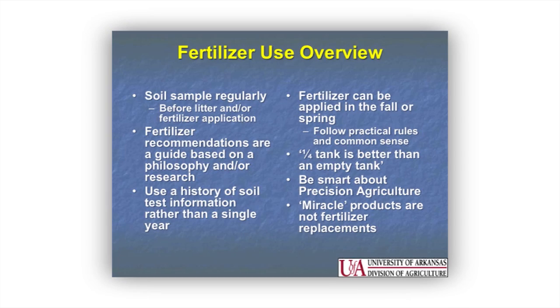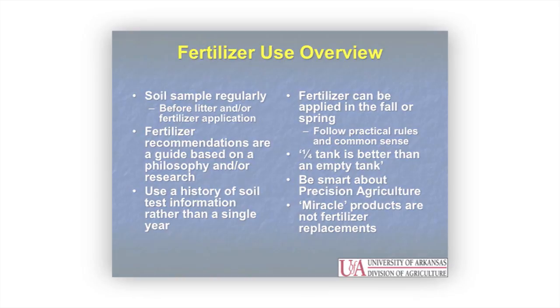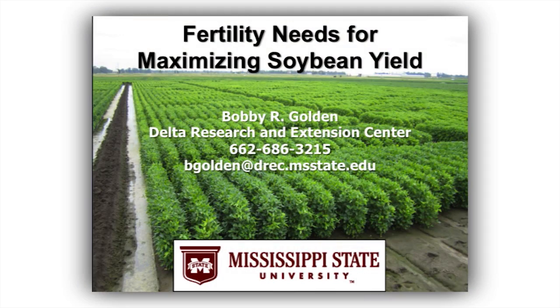To maintain high-yielding soybeans you need to soil sample regularly, and do this before putting out any litter or fertilization. It's also important to soil test behind the same crop in rotation if you're on a three-year cycle. Remember that fertilizer recommendations are based on a philosophy and all labs have different philosophies — it's more important to use a history of soil testing rather than a single year.